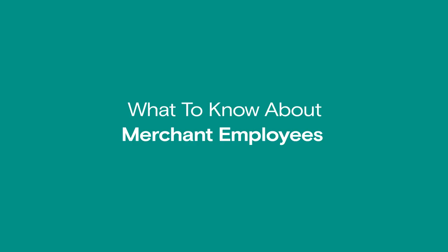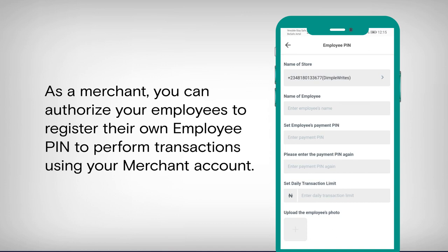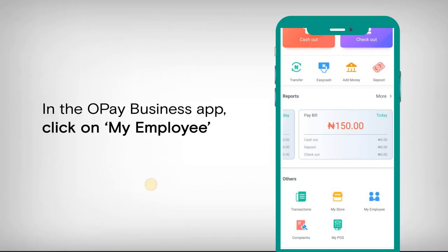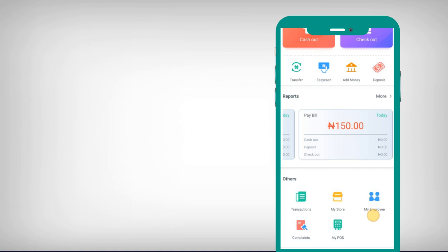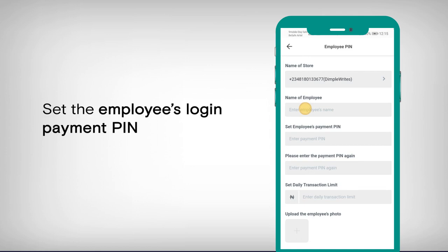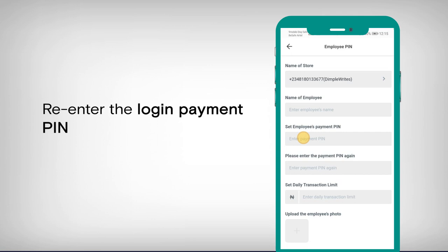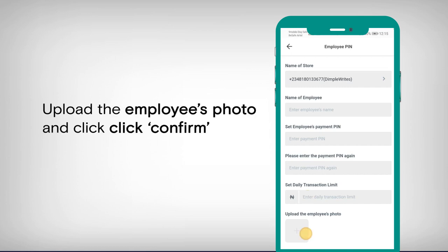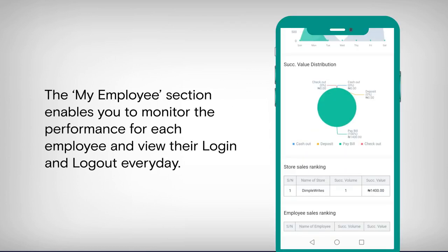What to know about merchant employees. As a merchant, you can authorize employees to register their own employee PIN to perform transactions using your merchant account. How to create an employee PIN: In the Opay business app, click on My Employee, then click on Add Employee. Enter the name of the employee, set the employee's login payment PIN, re-enter the login payment PIN, set a daily transaction limit, upload the employee's photo, and click Confirm. The My Employee section enables you to monitor the performance of each employee and view their login and logout every day.